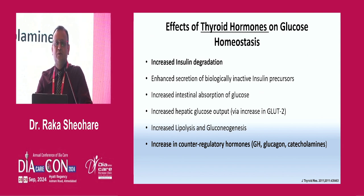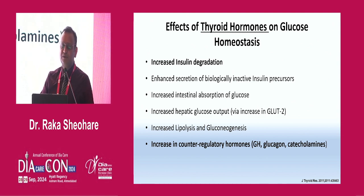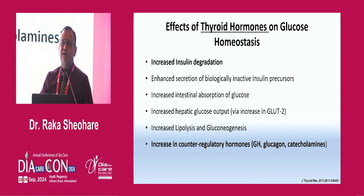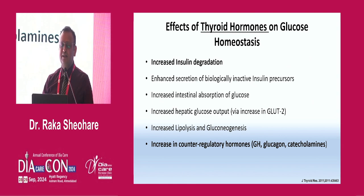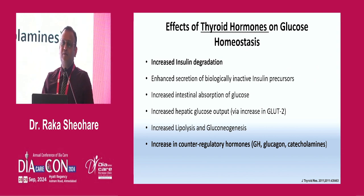Regarding hyperthyroidism — thyroid hormone increases insulin degradation, so whatever insulin is produced, it is rapidly degraded and cannot be utilized by the body. There is also enhanced secretion of biologically inactive insulin precursors, increased intestinal absorption of glucose, increased hepatic glucose output via GLUT2, increased lipolysis, gluconeogenesis, and increased counter-regulatory hormones — glucagon and catecholamines. This background orchestra of hyperglycemia-promoting mechanisms is why we cannot treat diabetes when the patient has unrecognized hyperthyroidism.